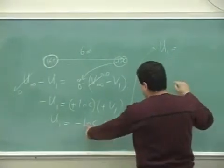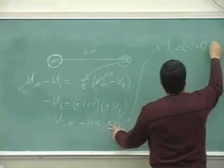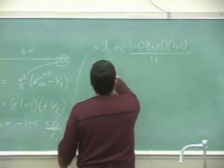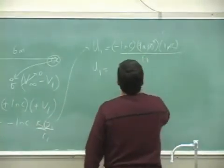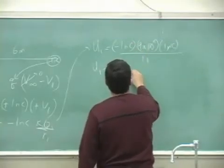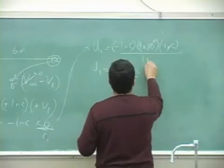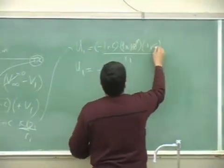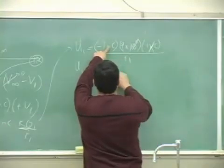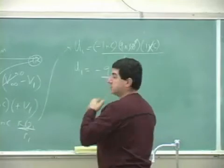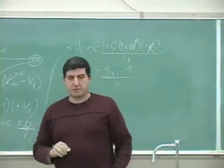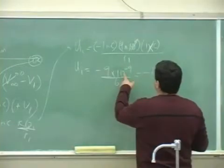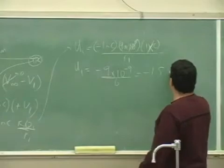So we get negative one nanocoulomb times nine times 10⁹ times another one nanocoulomb over r₁. The 10⁹ cancels one of the nano prefixes, leaving 10⁻⁹, and r₁ is six meters. So we get negative nine over six, which is negative 1.5 nanojoules.